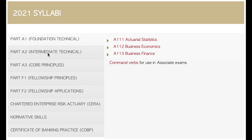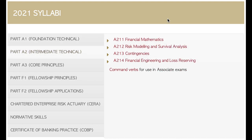Then we move on to the intermediate technical subjects, and this is where things start getting a little bit more difficult. We've got financial mathematics — interestingly, in England they combine financial mathematics and contingencies into one exam, which is unusual because in the old system these two were kept separate; the South Africans decided to keep them separate. Then there's risk modelling and survival analysis, which also has an R programming component and is very difficult. Contingencies is about calculating when people are going to die — mortality tables — arguably the most actuarial of all the subjects.